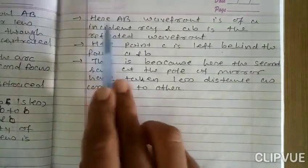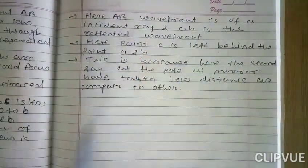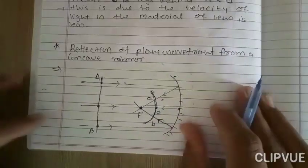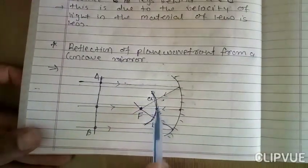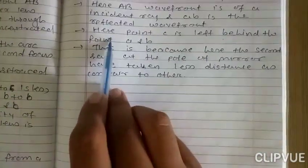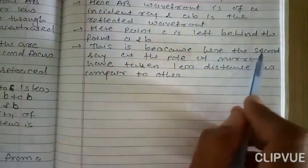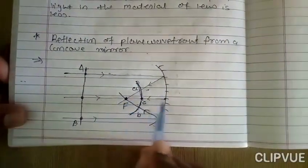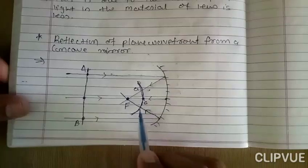So here, large AB wavefront is the incident wavefront and small AB is the reflected wavefront. You can see that this wavefront is due to the incident ray and small AB is the reflected wavefront. Here point C is behind point AB — you can see that. Point C is left behind point AB. This is because the center ray of the mirror has taken less distance compared to the others. So C is behind point AB.